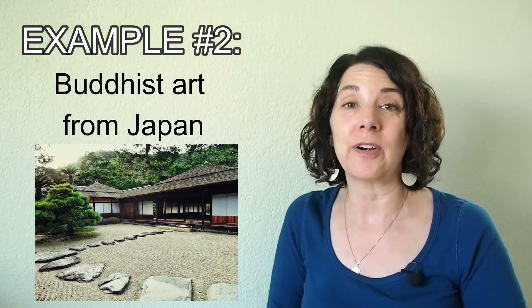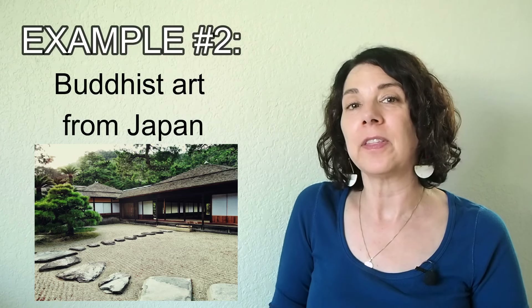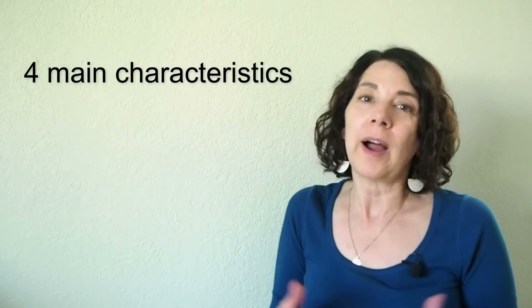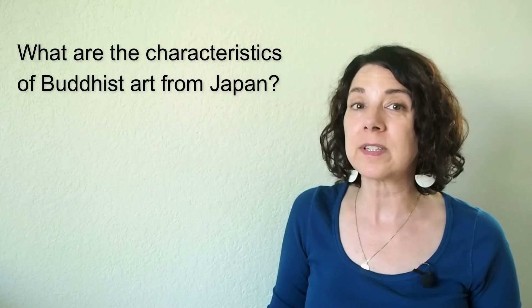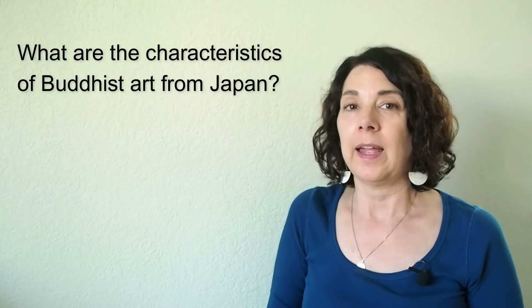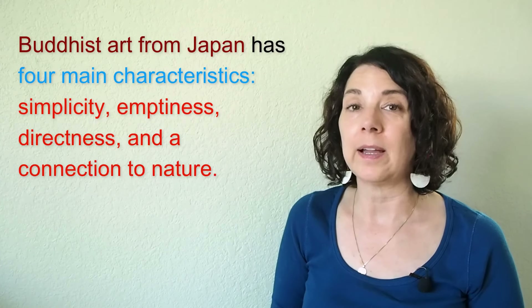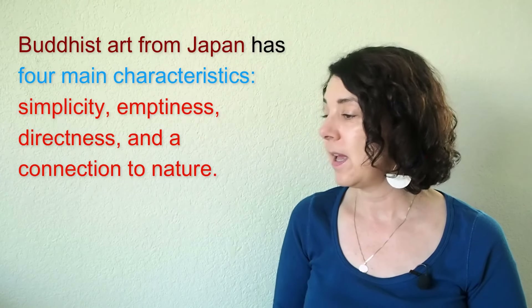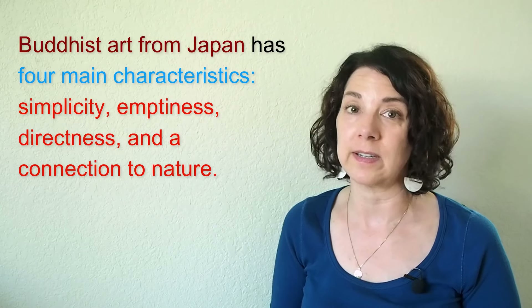Next, the topic is Buddhist art from Japan. When I did a little research, I found that there are some characteristics of this art. So I could ask the question: 'What are the common characteristics of Buddhist art from Japan?' And I could make a thesis statement like this: 'Buddhist art from Japan has four main characteristics: simplicity, emptiness, directness, and a connection to nature.'